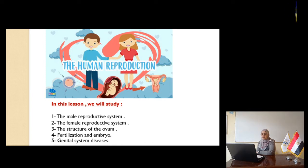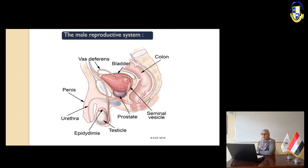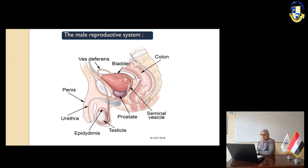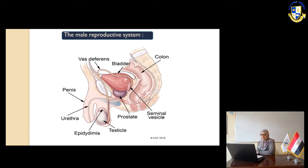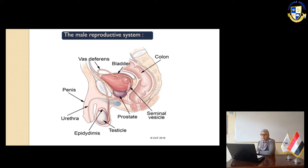Slide number 3. Here we can see the male reproductive organs. We can see the testes surrounded by the scrotal sac. Above the testes is the epididymis, and we can see the penis. Inside it there is a urethra and a urinary opening. Here we can see the vas deferens, the urinary bladder, and the seminal vesicle, prostate gland, and Cowper's gland.